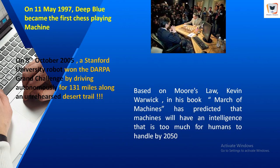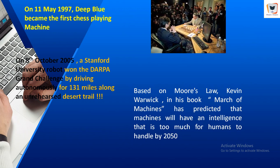Based on Moore's Law, Kevin Warwick — a British engineer known for his studies on direct interfaces between computer systems and the human nervous system, and for his research in robotics — predicted that machines with human-level intelligence will appear by 2029. In his seminal book 'March of the Machines,' he also suggested that it is not too far-fetched that we will have machines with an intelligence too much for human beings to handle by 2050.